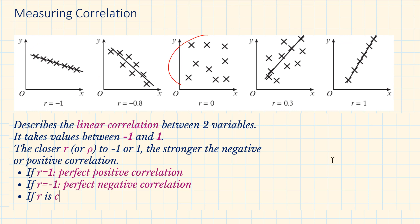When the value of R is close to 0, there is no correlation. However, there might still be a non-linear relationship between the variables.